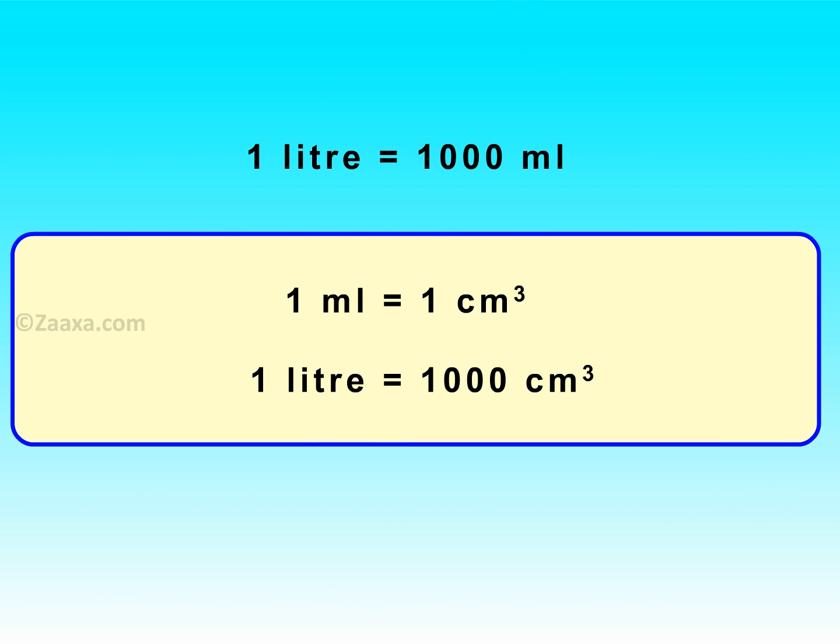The other pair of units used for measuring capacity are the litre and the milliliter. Always remember that one litre is equal to one thousand millilitres and one milliliter is equal to one centimetre cube. Since one milliliter is equal to one centimetre cube, we can say that one litre is equal to one thousand centimetre cube.